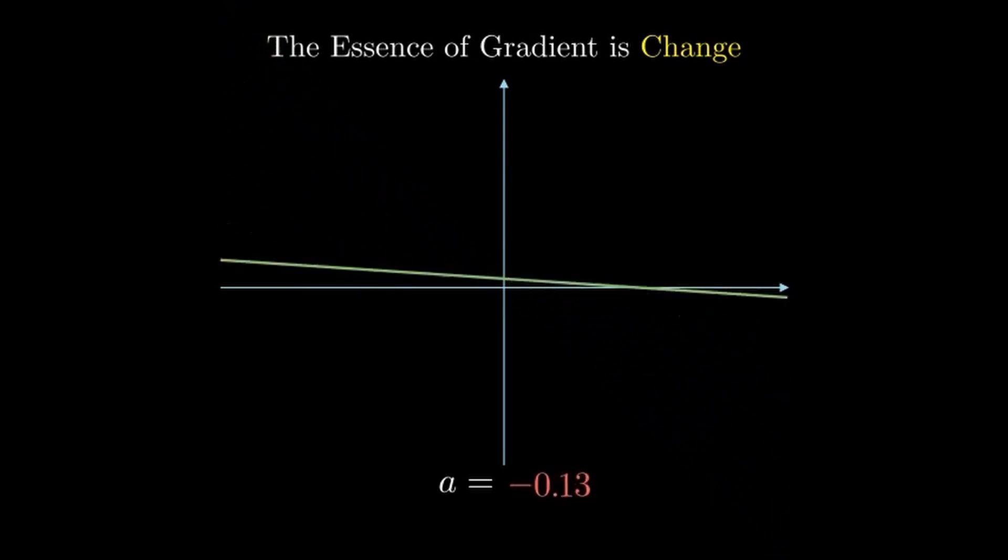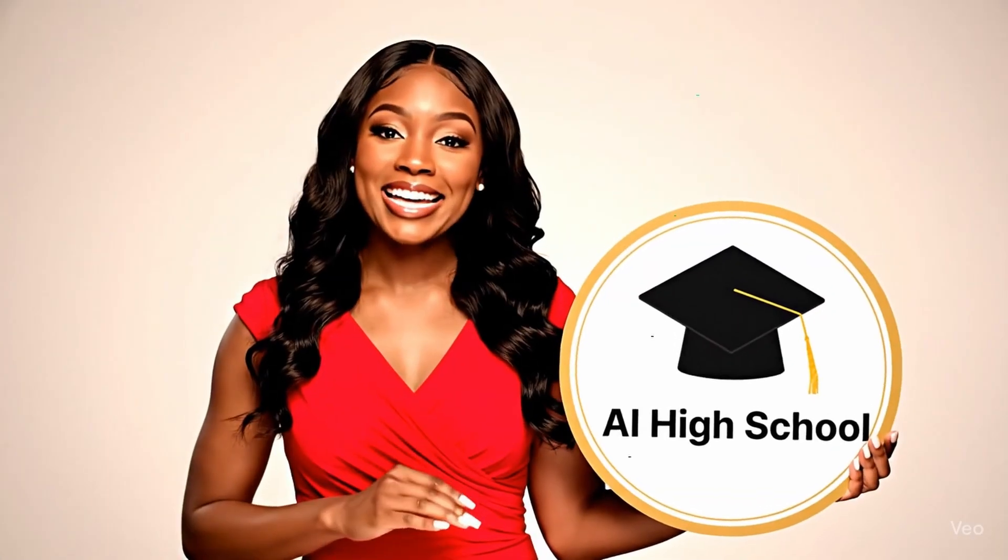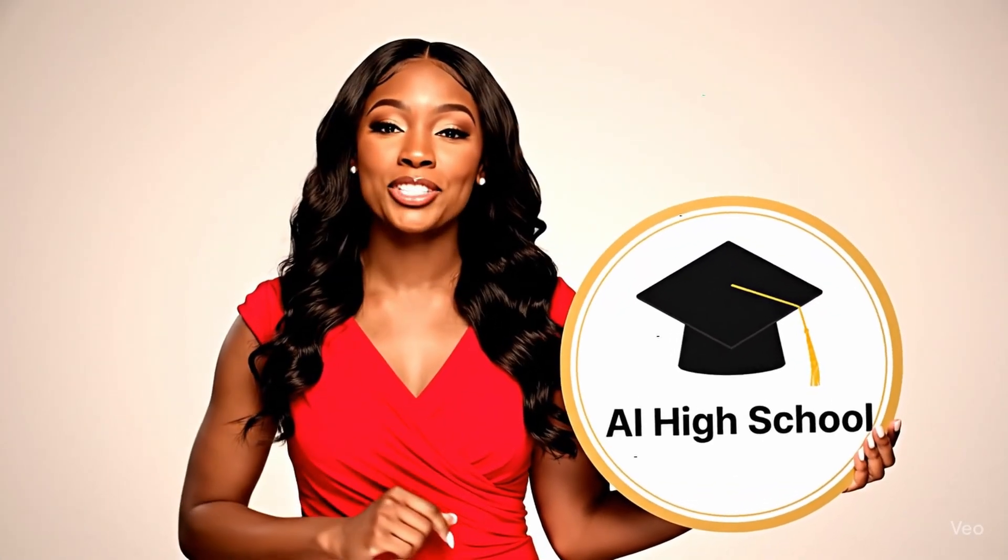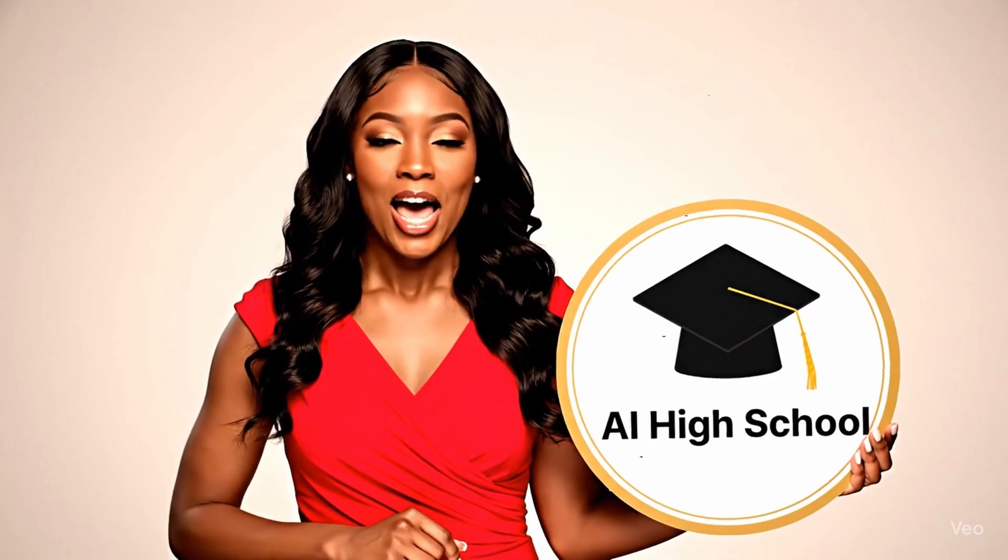In this case, the gradient is just a single number that says how steep is this line. Technically, the sign of that number also tells you the direction: positive means uphill to the right, negative means uphill to the left. That's the baby version of a gradient.